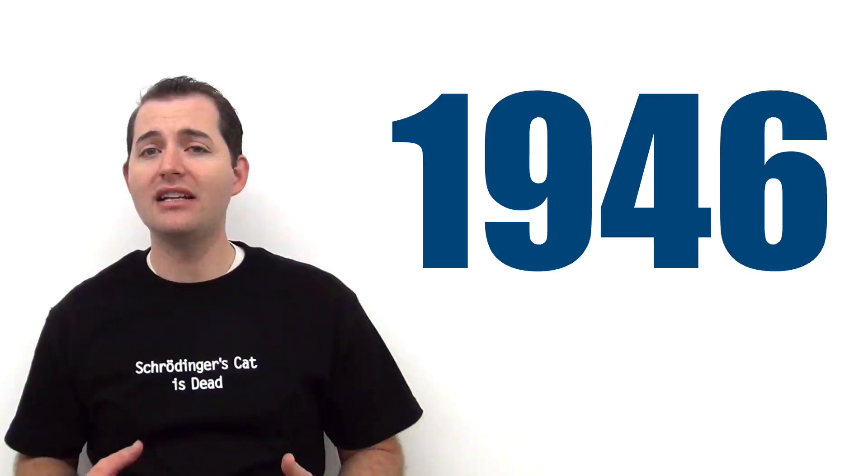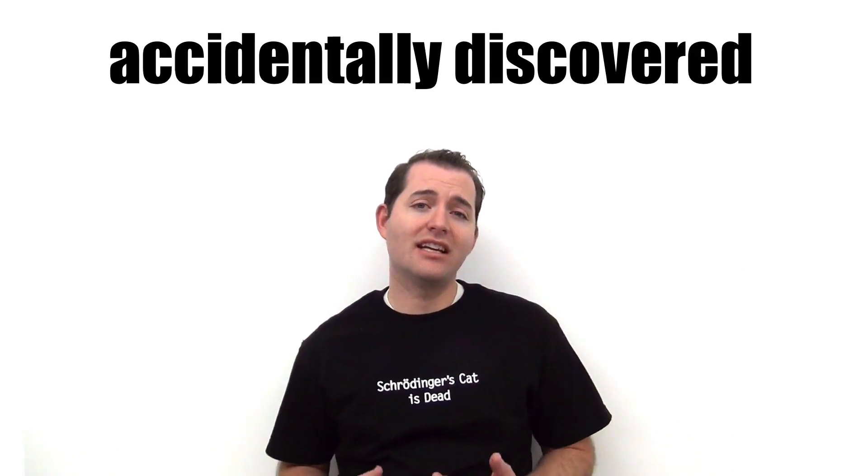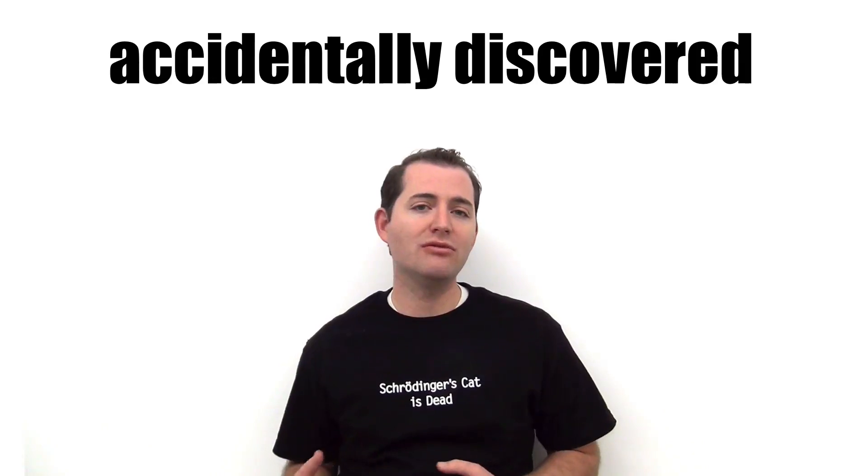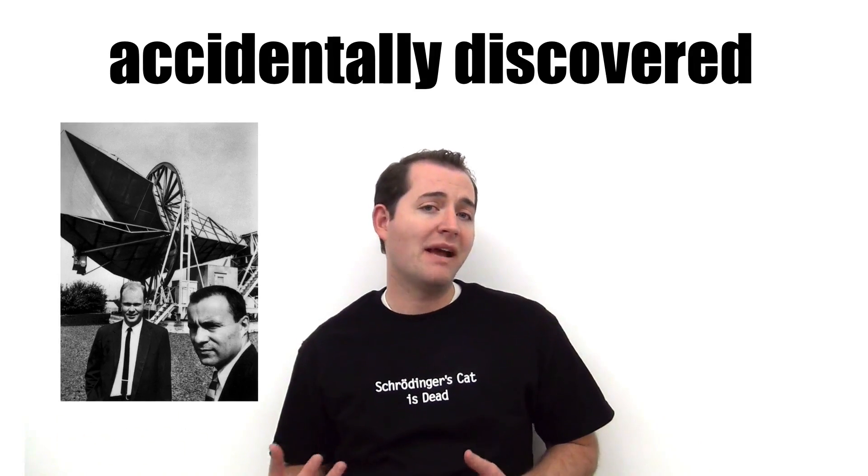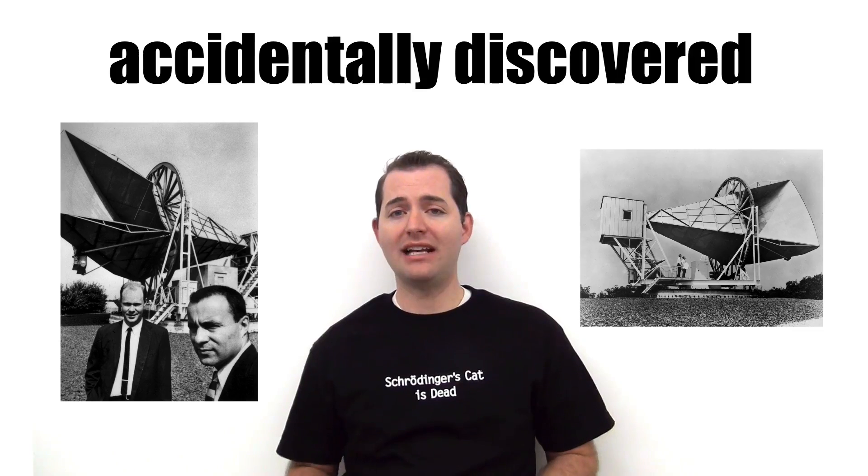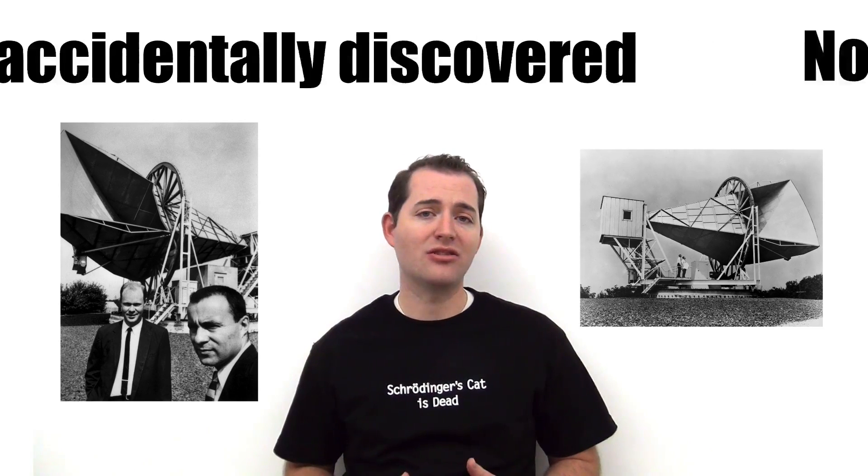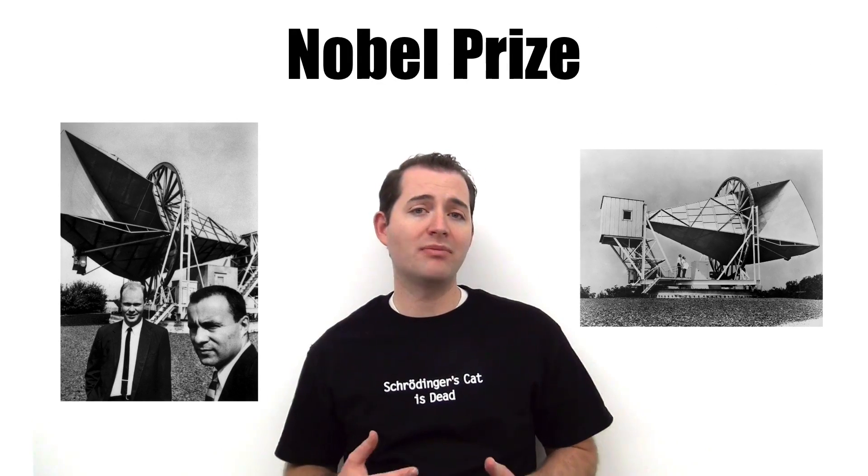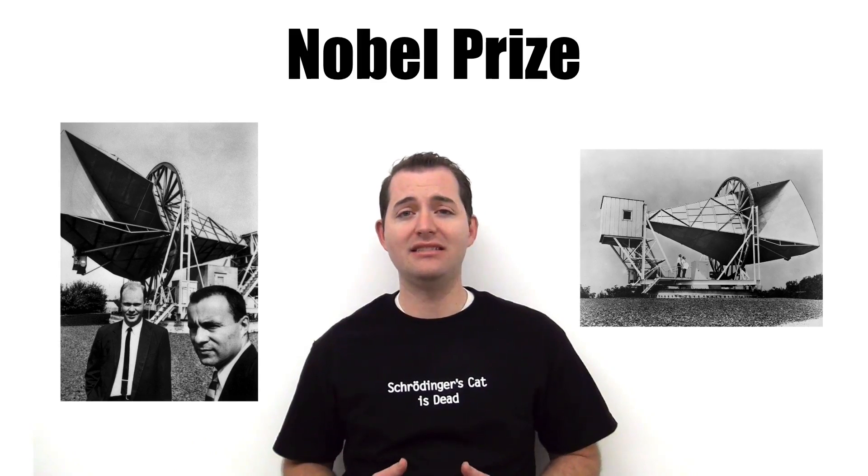The existence of the CMB was first predicted in 1946. The CMB was accidentally discovered in 1964 by two radio astronomers, Arno Penzias and Robert Wilson. The CMB was first identified as static on their radio telescope and they eventually won the Nobel Prize for this discovery in 1978.